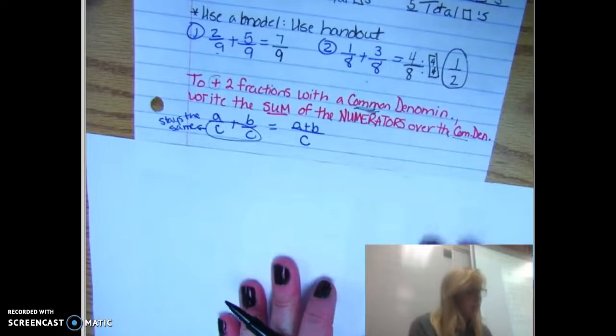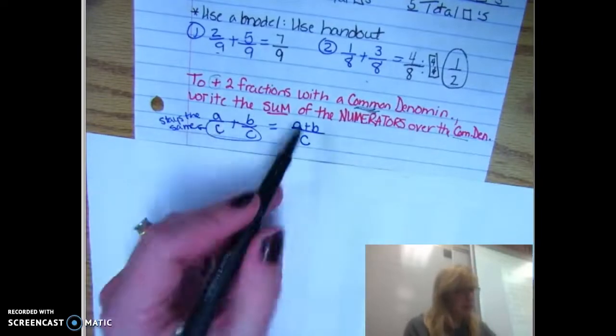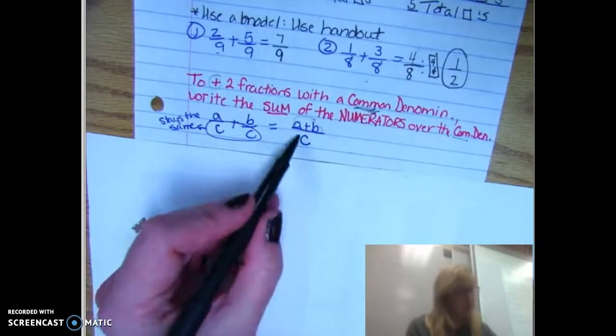You write the sum of the numerators over the common denominator. That's a fancy way of saying the denominator stays the same and you just add the numerators. This is the algebra for that.